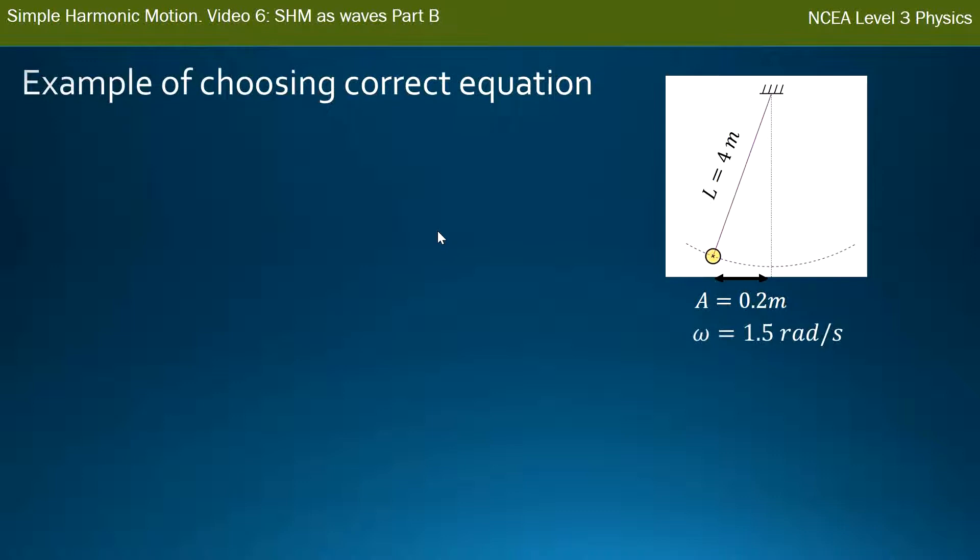We'll quickly go through this process again of choosing the correct equation. We need the important info which is given to us: the amplitude and the angular frequency of 1.5 radians per second. We need to set up our coordinate system so zero goes in the middle. We choose our positive to be the side the object starts at. If it doesn't start at one of the sides but starts in the middle, then you're free to choose which side you want to be positive. I've chosen the left to be positive.